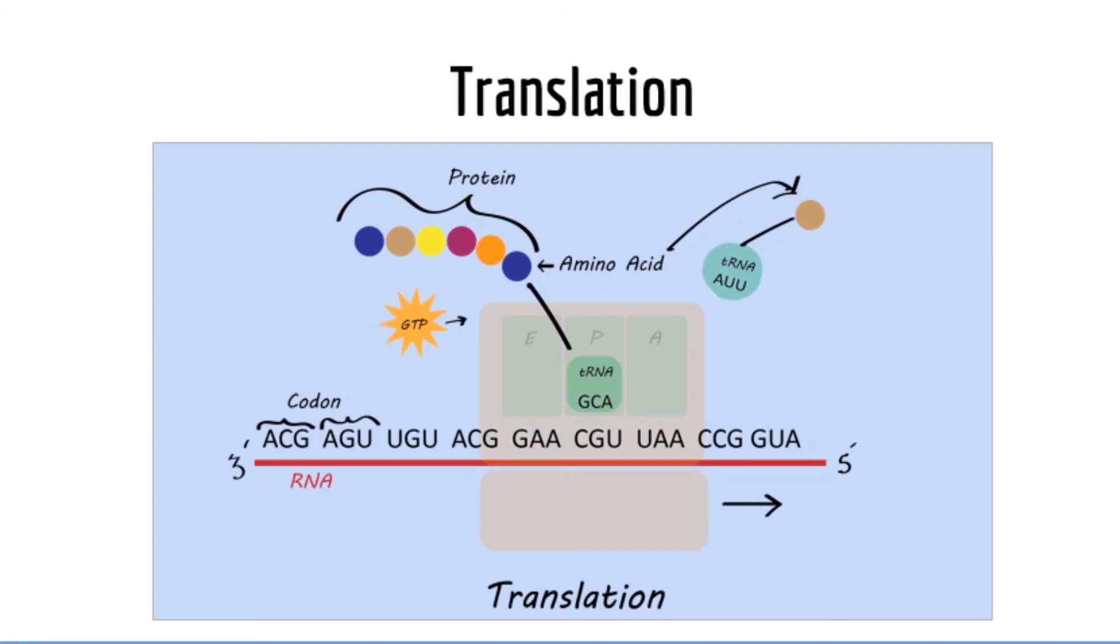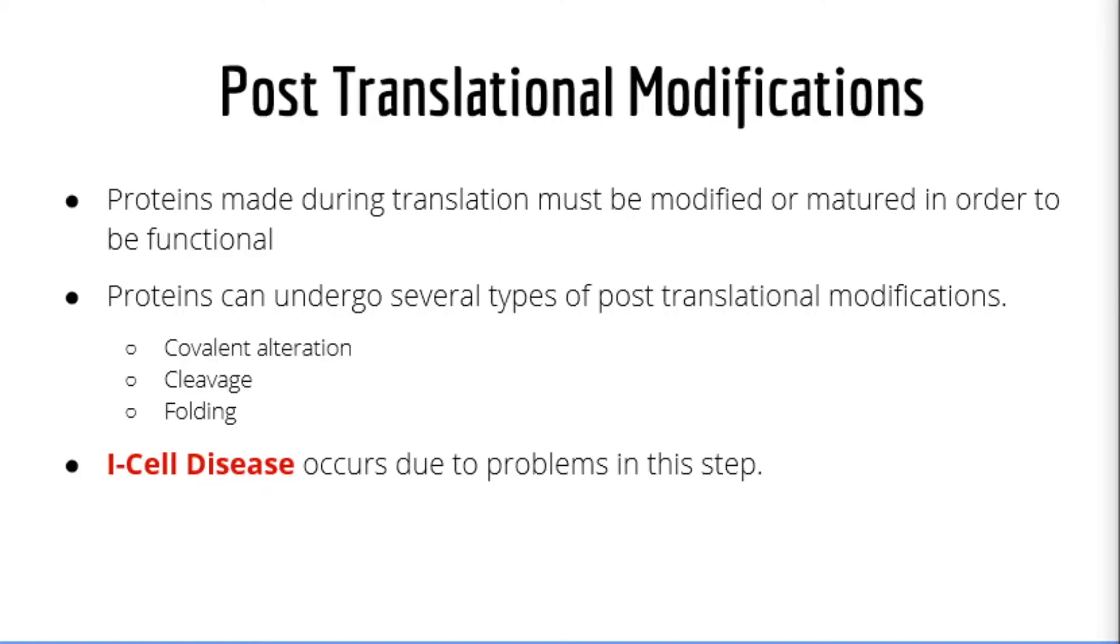This entire process requires amino acids, tRNAs, mRNA, ribosomes, and energy in the form of GTP and ATP. Just like RNA, new proteins must be processed and modified in order to function correctly.